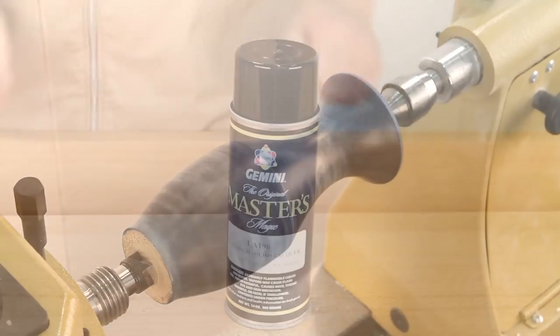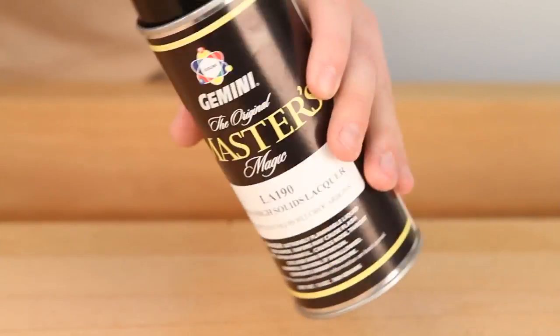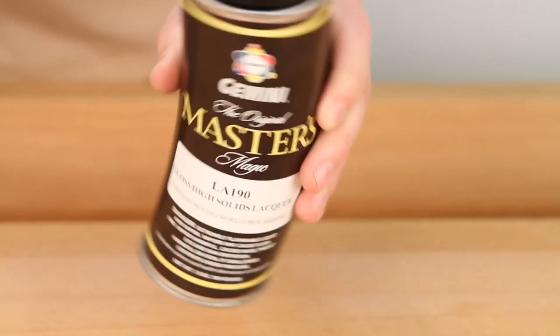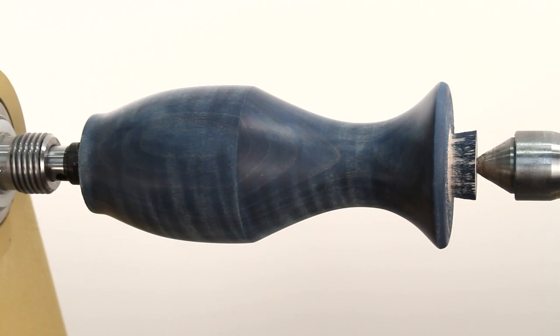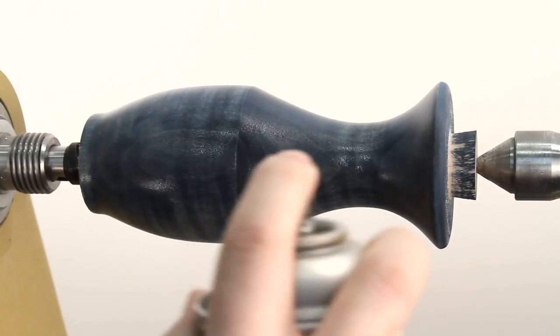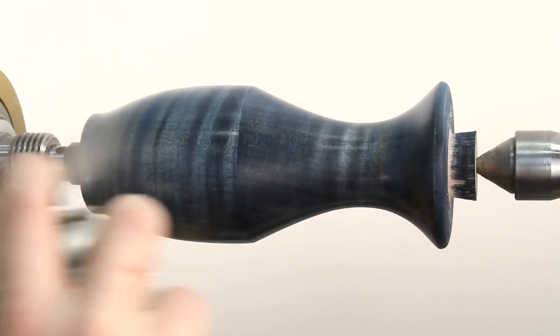Next, shake the spray can vigorously to ensure a complete mixture of the spray lacquer. Once it's mixed, spray on a light coat covering the entire project. Don't spray too much or you'll have lacquer runs.